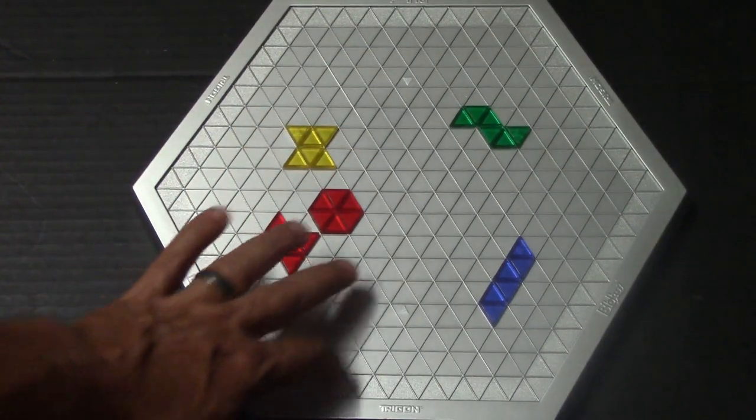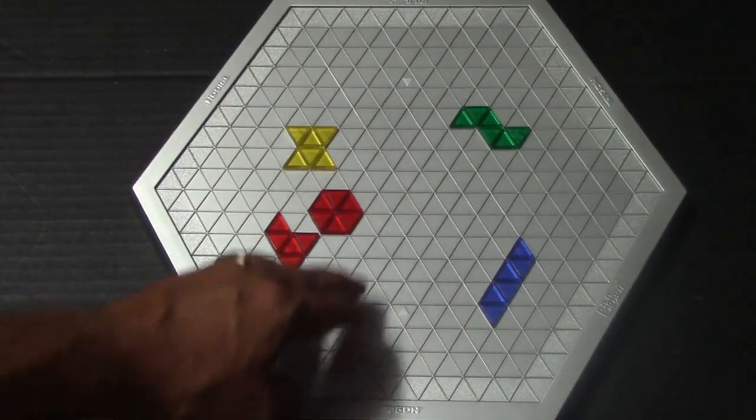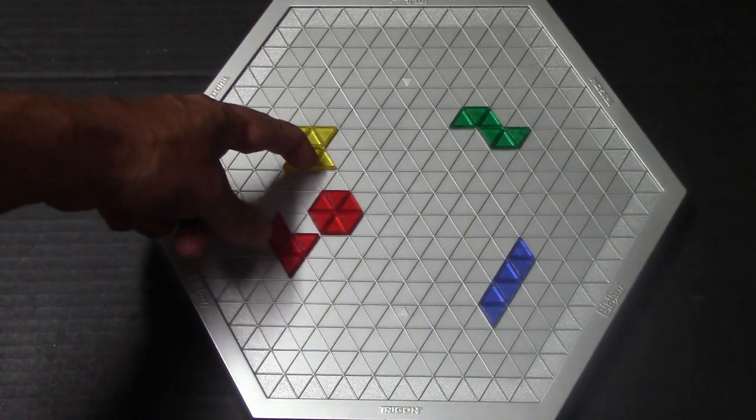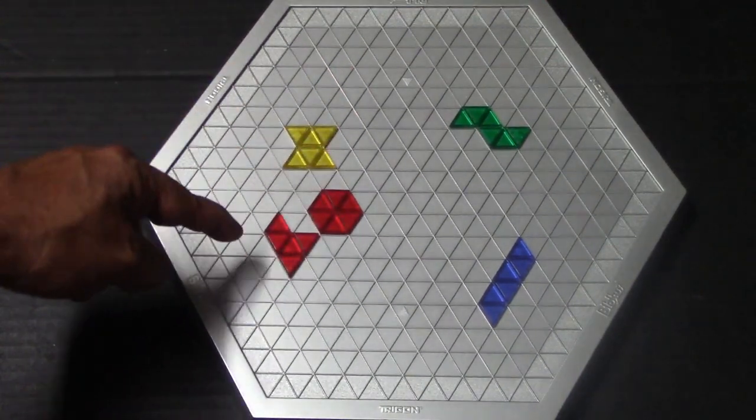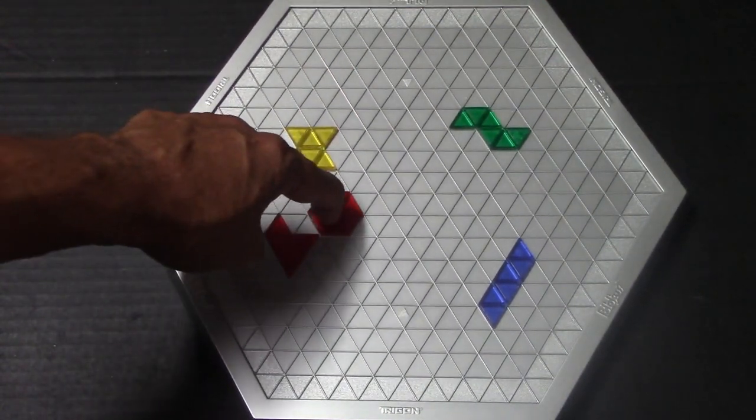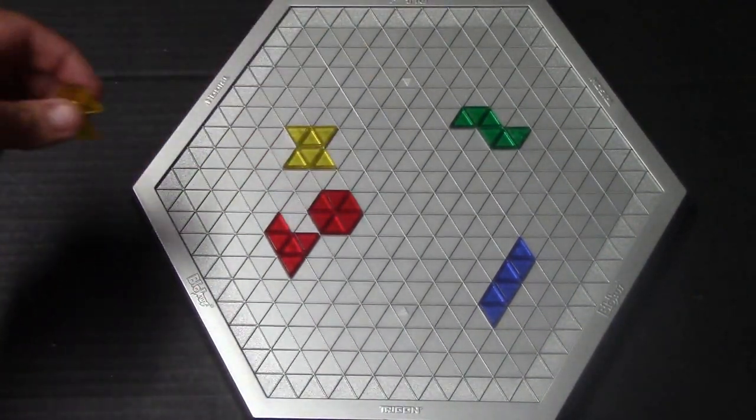So you might try to block off a section of the board so they can't get there. Now you can touch your opponent's piece with your piece. The only real rule is that you have to be in contact with your piece in the corner. So let's say it's yellow's turn.